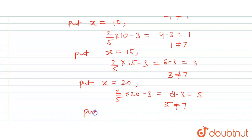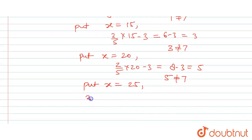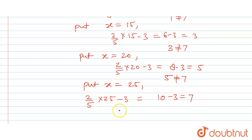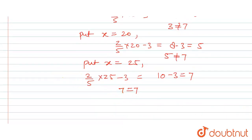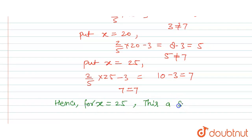So next we will try x equal to twenty-five. Two upon five multiplied by twenty-five, minus three — twenty-five cancels with five to give five — so two into five is ten, and ten minus three is equal to seven. Seven equals seven, so x equals twenty-five is the solution.